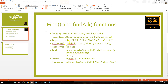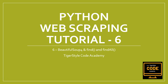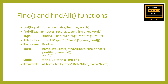The attributes argument — sorry about the typo — takes a Python dictionary of attributes and matches tags that contain any of those attributes. The example shown on the right for attributes is a function that would return both the green and red span tags in the HTML document.